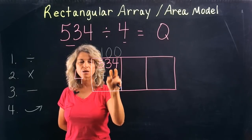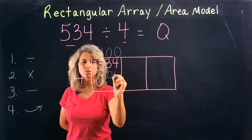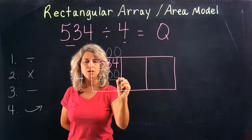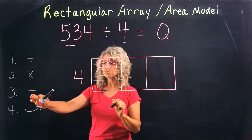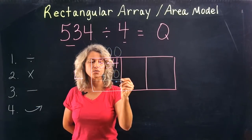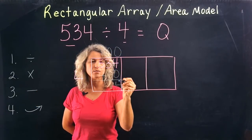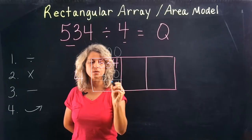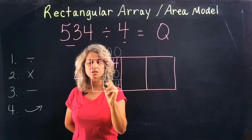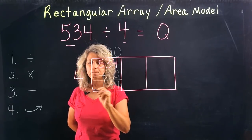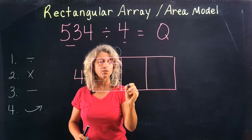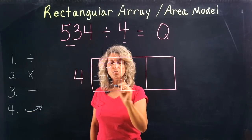Step two is to multiply: 1 times 4 is 4, and don't forget we're going to fill in the zeros as well. Step three is subtract: bring your 4 down — 3 minus 0 is 3, 5 minus 4 is 1.